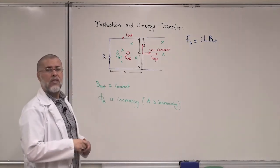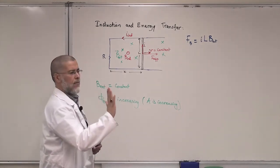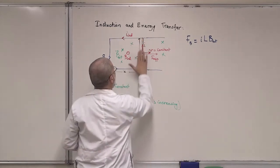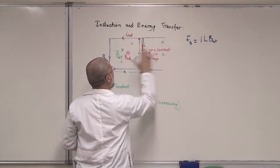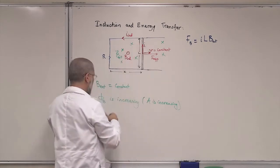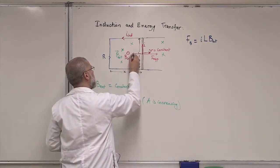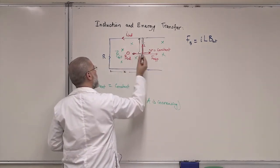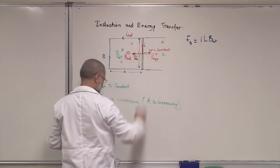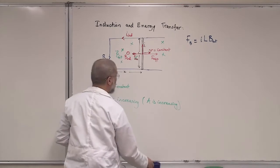What is the direction of that magnetic force? Your fingers go with the current, which is upward here; B external is into the page, so the force will be to the left. So there will be a magnetic force FB in this direction — to the left.